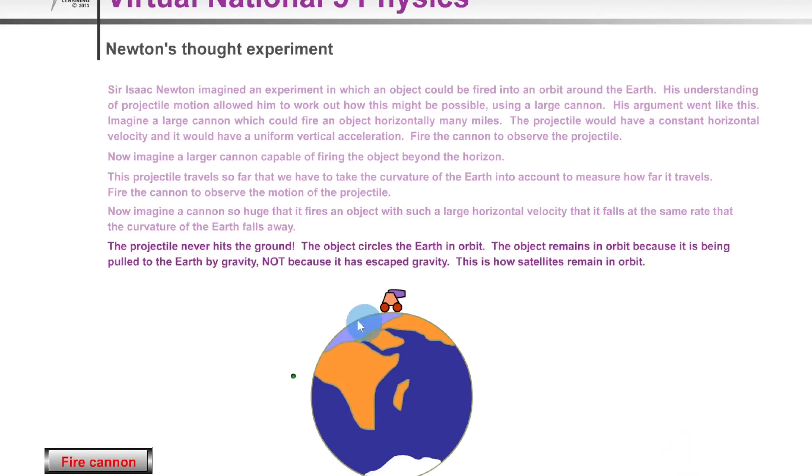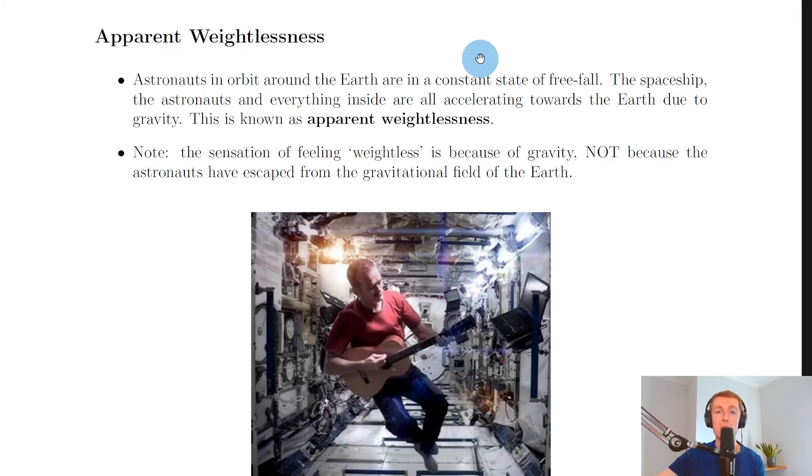If I click fire now, you'll see we get that circular orbit traveled by the projectile. The projectile never hits the ground. The object circles the Earth in orbit because it is being pulled to the Earth by gravity, not because it has escaped gravity. This is how satellites remain in orbit.